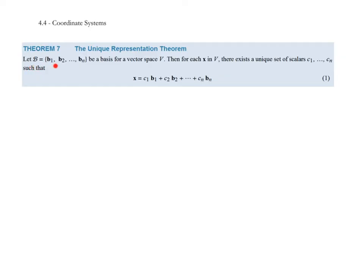In the theorem, we have a basis B = {b₁, b₂, ..., bₙ} for a vector space V. Then for each x in V, each vector in that vector space, there exists a unique set of scalars—that's where the term unique comes from—such that x equals that linear combination of vectors c₁b₁ + c₂b₂ + ... + cₙbₙ. It says every vector in the vector space can be represented in one and only one way by a basis.